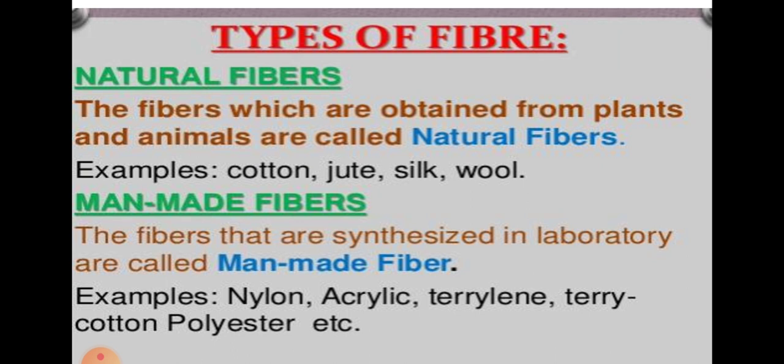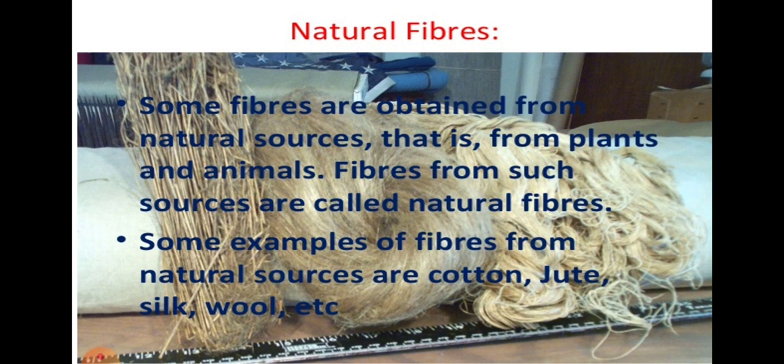There are two important types of fiber: natural fiber and man-made fiber. The fibers which are obtained from plants and animals are called natural fibers. For example, jute, silk, wool, and cotton. Man-made fibers, or synthetic fibers, that are synthesized in the laboratory are called man-made fibers. For example, nylon, terrylene, polyester, etc. Some fibers are obtained from natural resources — plants and animals — and are called natural fibers.